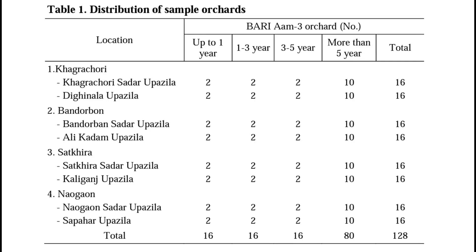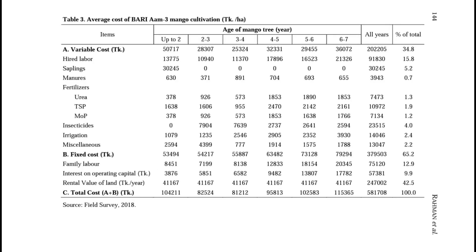The next table represents the average cost of Bariyam 3 mango cultivation in taka per hectare. Note that 83 BDT is equal to one US dollar, so you can easily convert these figures to your country's currency. Here is the list of different types of costs incurred during the cultivation period.